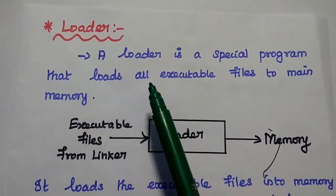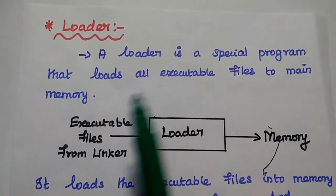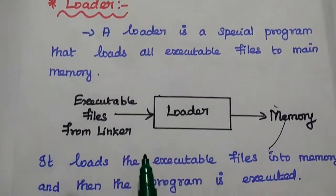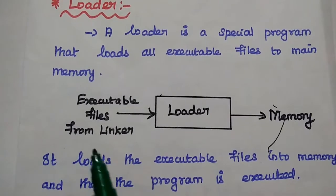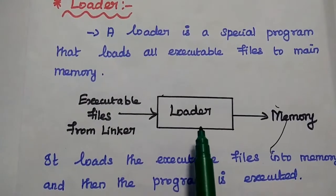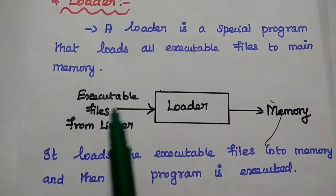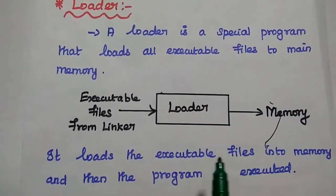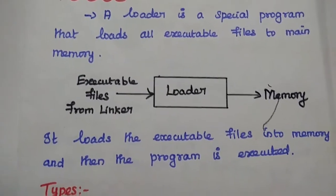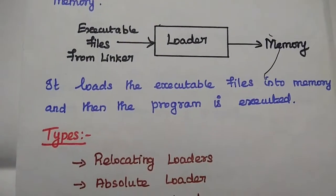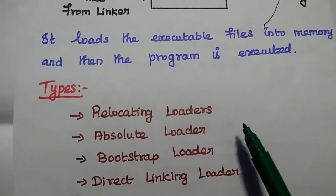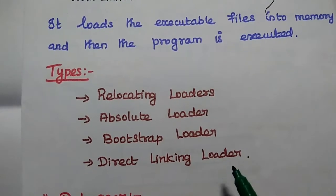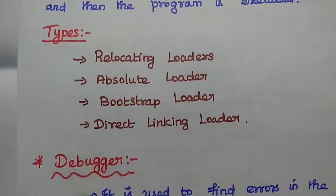The next one is the loader. It is a special type of program that loads all executable files to main memory. We give the executable files from the linker as input to the loader, and then it loads all the executable files into memory and the program starts executing. Types of loaders: relocating loader, absolute loader, bootstrap loader, and direct linking loader. Different types of loaders are available.